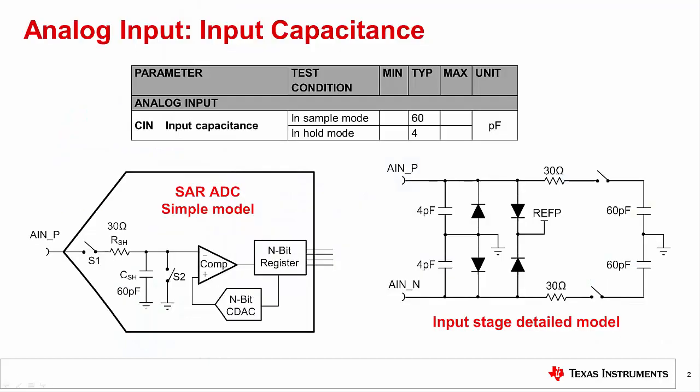Let's start with input capacitance. The input sample and hold capacitance of a SAR ADC is normally specified in the data sheet. At the top of this slide, we show an excerpt from the ADS-9110 data sheet, indicating that the input capacitance is typically 60 picofarads when in sample mode and 4 picofarads in hold mode.